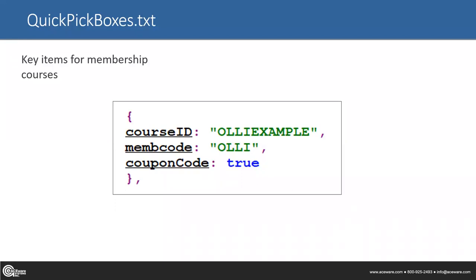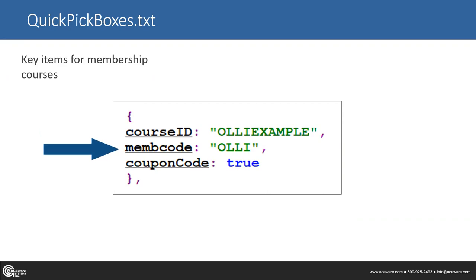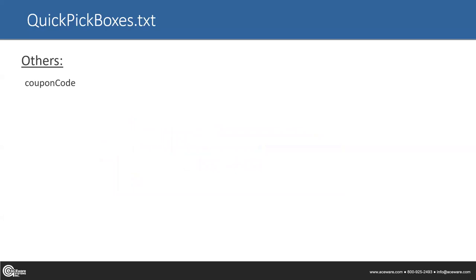Quick Pick Boxes dot text — there are a lot of different items you can put in here. I'm going to show you my working copy and mess with it a little bit so you can see what changes where. The big important items are your course ID, because that is your course code. This is something you're changing every time you're opening registration. You need to make sure your course ID is there. The other thing is your member code, which is just 'mem code' in the file. If you have your course set to open for enrollment and set to publish register but you're still not seeing it, come in here and make sure you've updated your course ID in that Quick Pick Boxes dot text file.